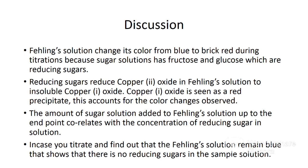Fehling solution changes color from blue to brick red during titration because sugar solutions contain a small percentage of fructose and glucose, which are reducing sugars. Reducing sugars reduce copper(II) oxide in Fehling solution to insoluble copper(I) oxide, which is seen as a red precipitate — this accounts for the color change observed. The amount of sugar solution added up to the end point correlates with the concentration of reducing sugars. If the Fehling solution remains blue after titration, that shows there are no reducing sugars in the solution.